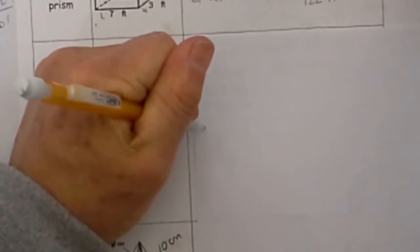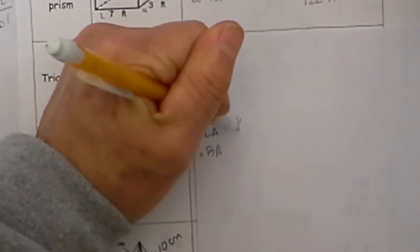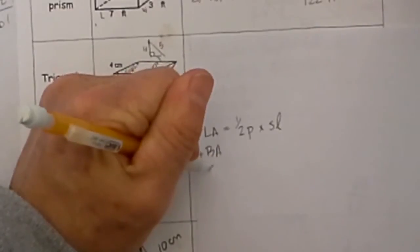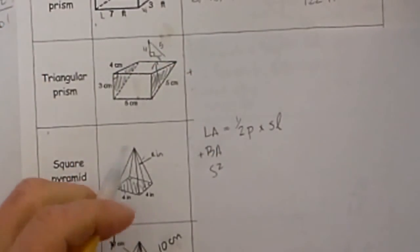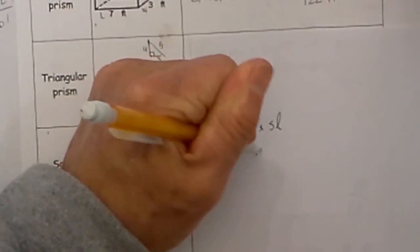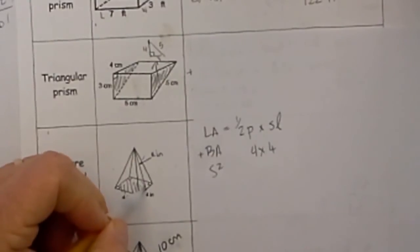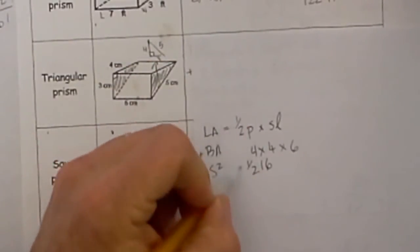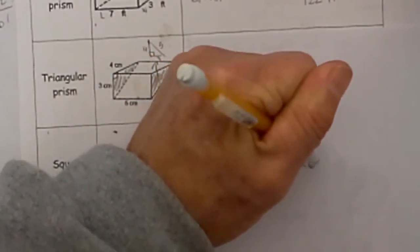Now let's look at the square pyramid. We calculate the lateral area and add it to the base area. For the lateral area we use ½ times the perimeter times the slant height. The perimeter is 4+4+4+4, which we write as 4×4=16. Then ½ times 16 equals 8, and 8 times the slant height of 6 equals 48 for the lateral area.